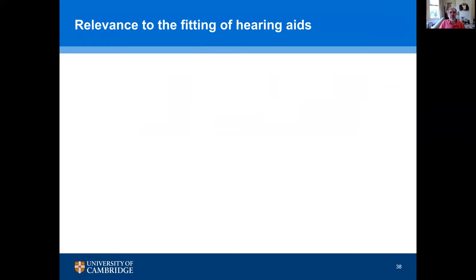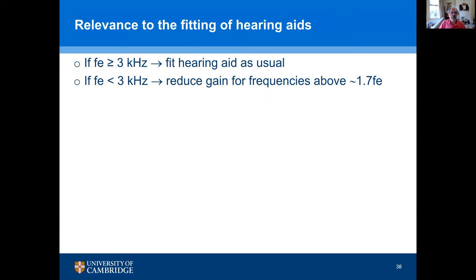How do we apply this to the fitting of hearing aids? We've developed a rule of thumb: if the edge frequency is greater than 3 kHz, fit the hearing aid as usual without changing your normal fitting method. But if the edge frequency is below 3 kHz, we recommend reducing the gain for frequencies above 1.7 times the edge frequency. A number of studies have found that this gives better results than standard fitting methods.